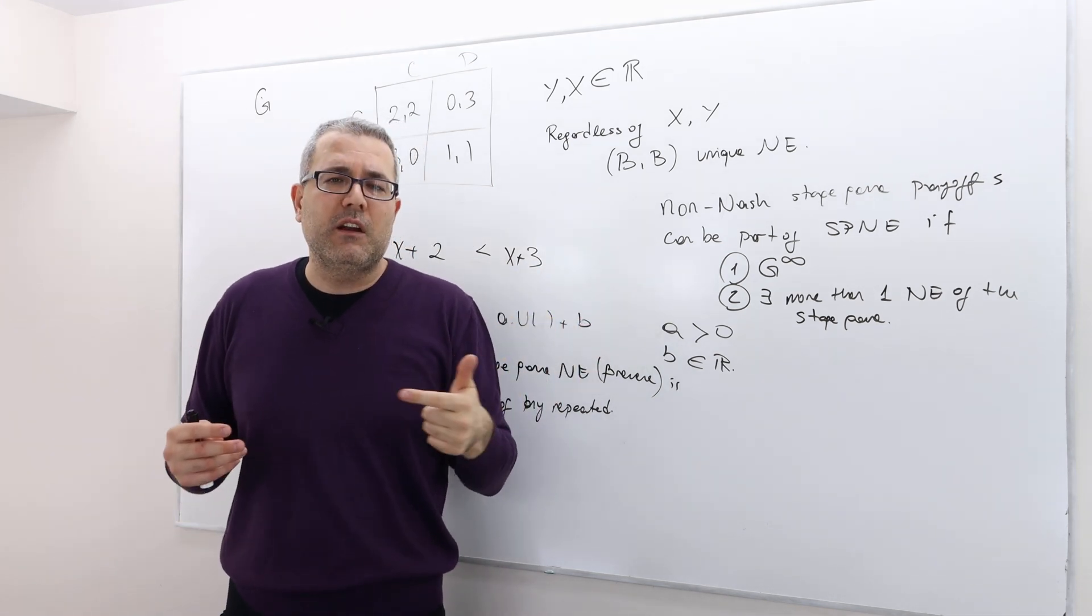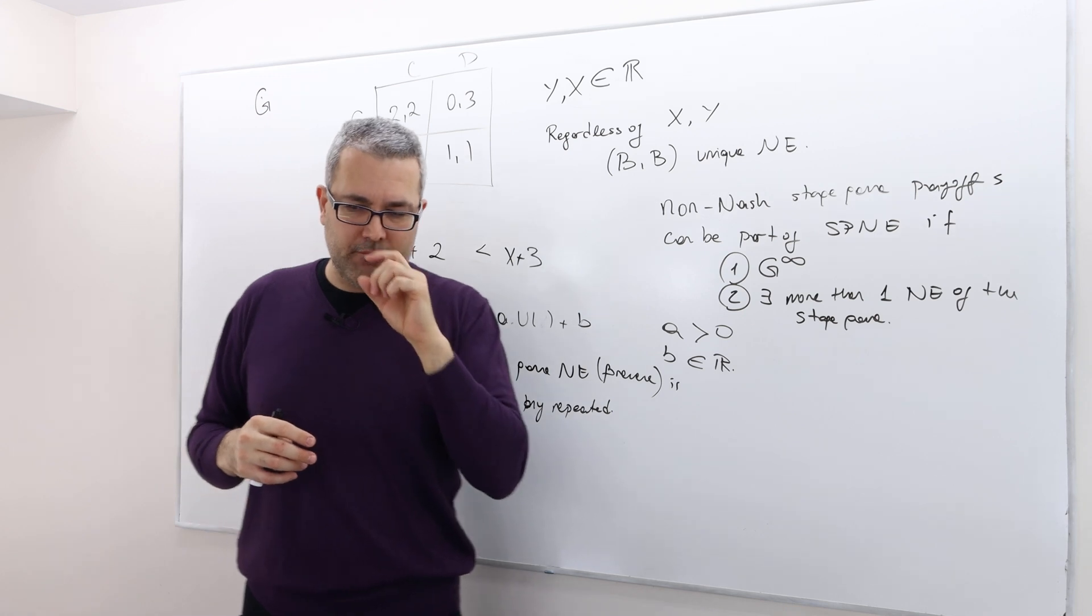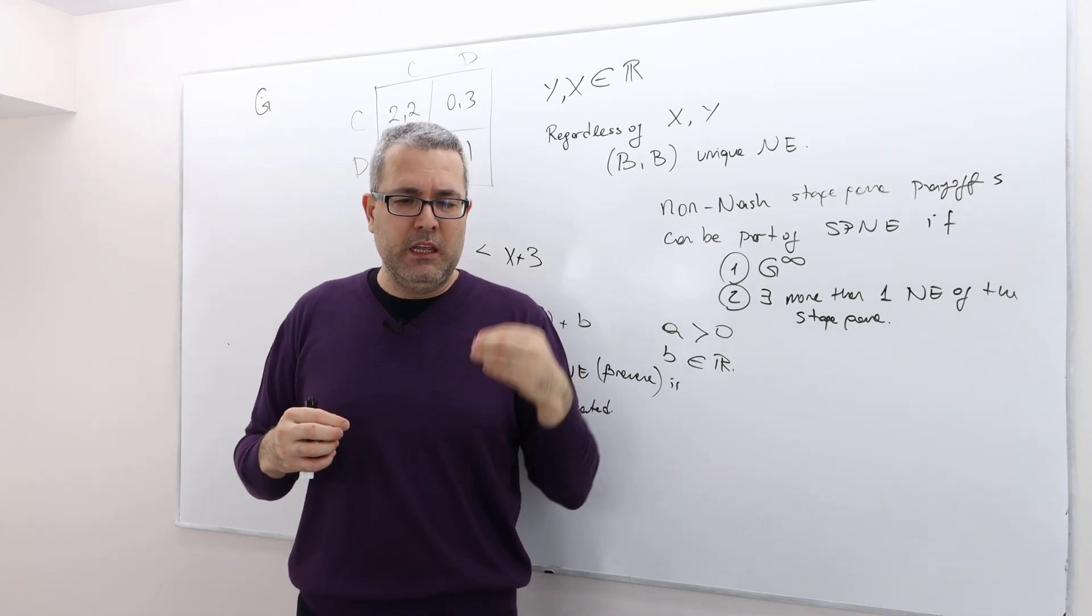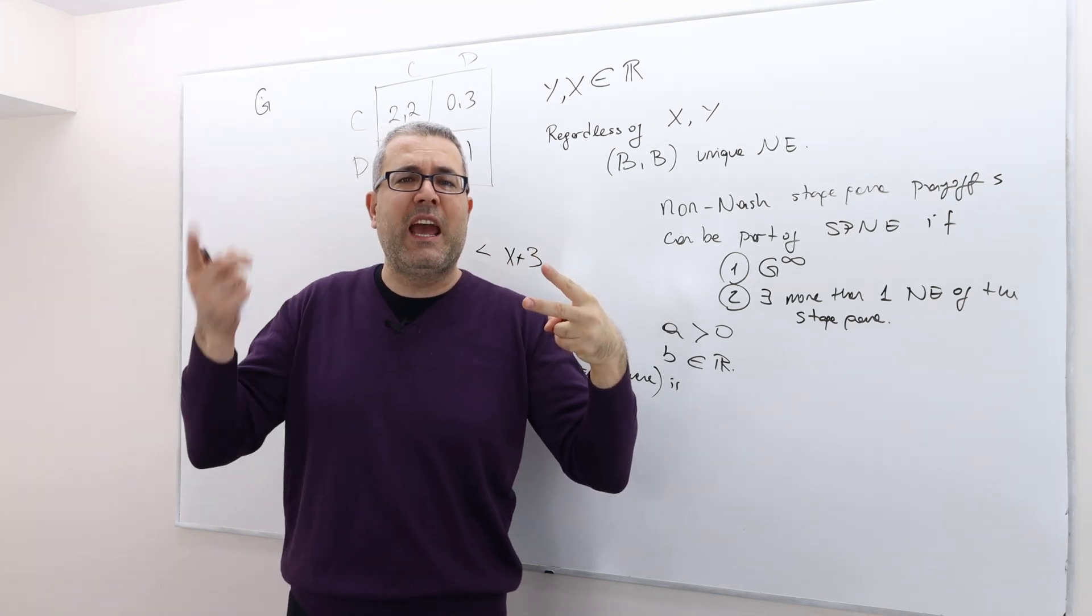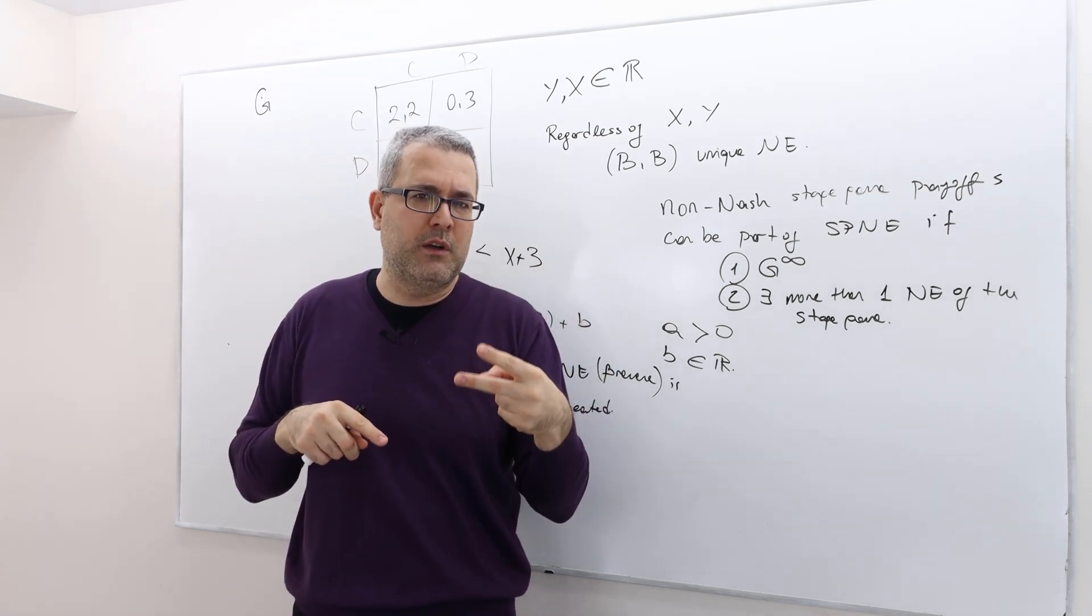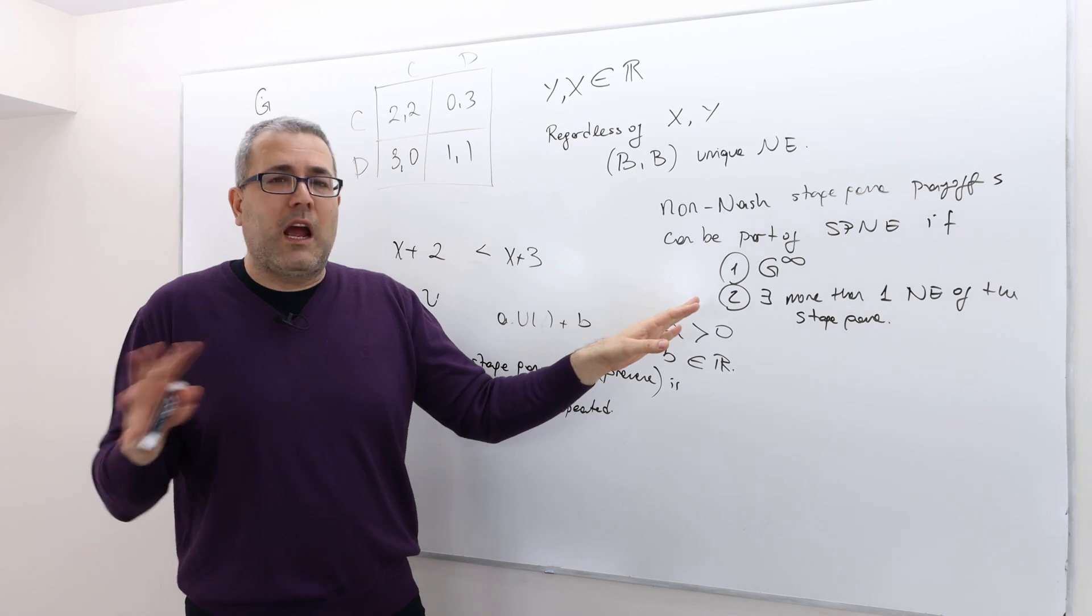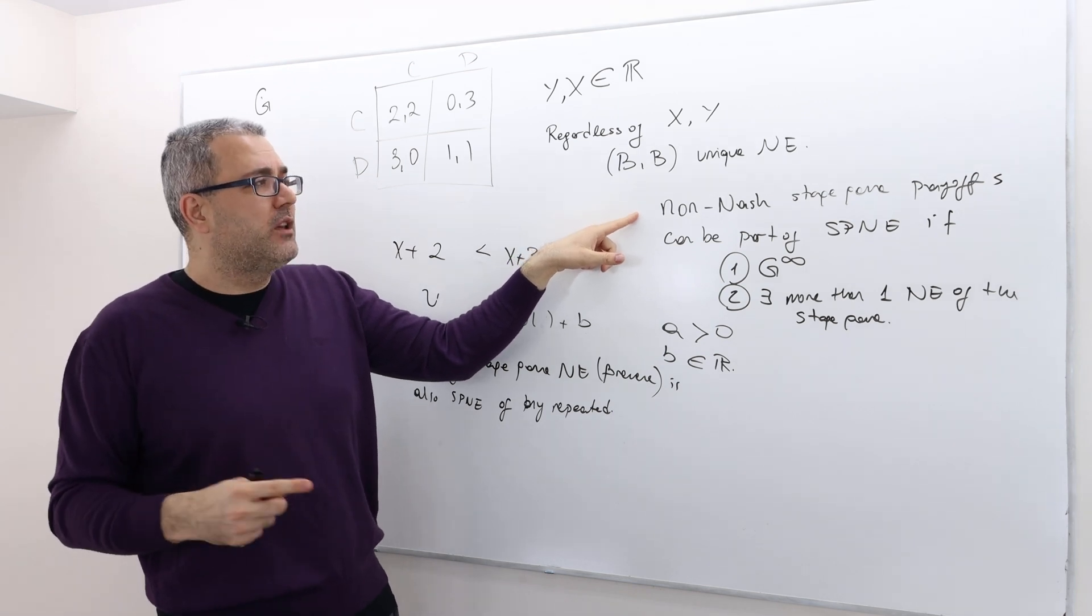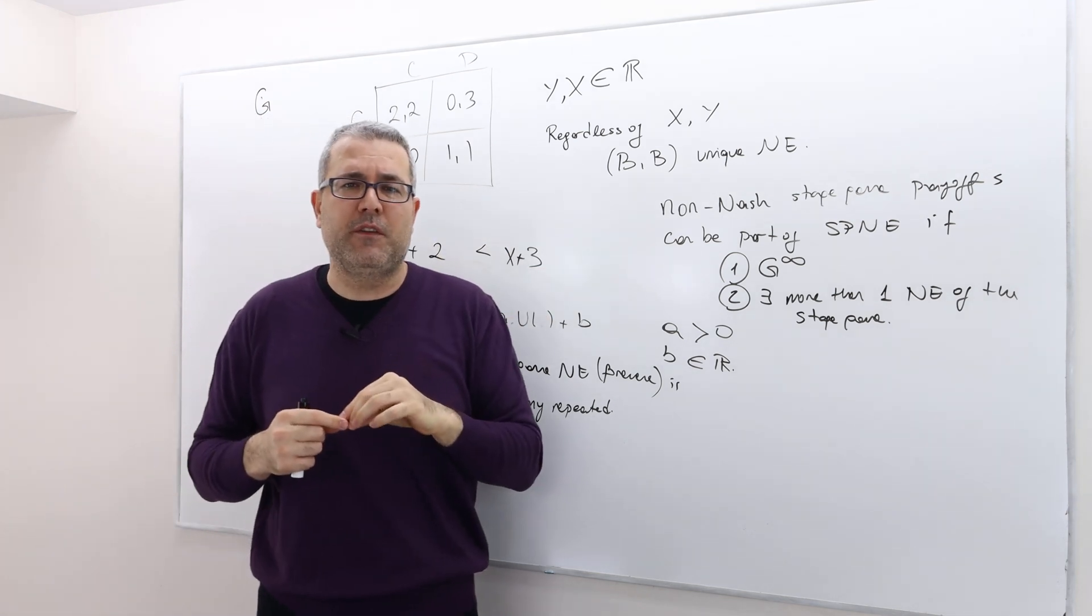However, some games - I think I solved one example in one of my lecture videos - if there are more than one Nash equilibrium like two pure strategy Nash equilibria, then we can achieve non-Nash stage game payoffs. In many nice games, the number of Nash equilibrium is usually odd. If you found two pure strategy Nash equilibria, there should be another Nash equilibrium, pure or mixed.